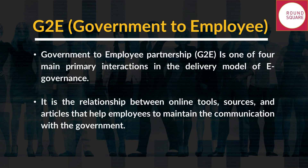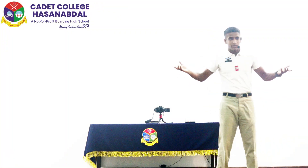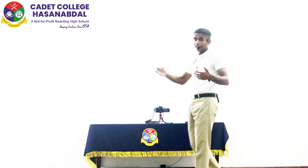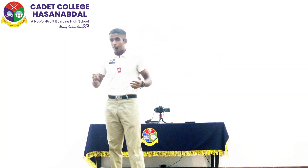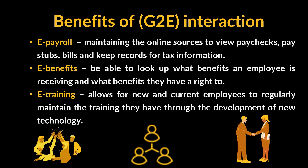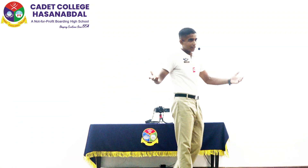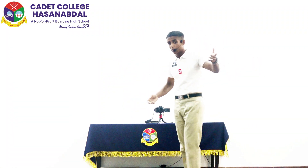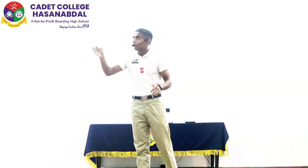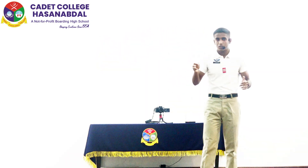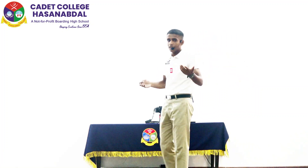Last but not least, we have G2E, or government-to-employee interaction. As the name suggests, this is the interaction between the government and its employees. Some of its benefits are displayed on the slide above me. These include electronic payroll — the ability to store and view records online — electronic benefits, which are benefits provided to employees by the government available online, and electronic training, which is virtual training provided to employees by the government.